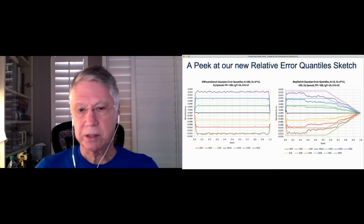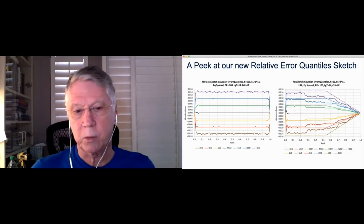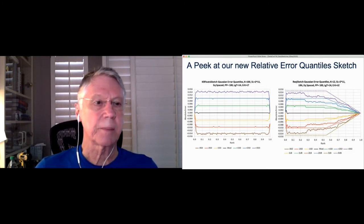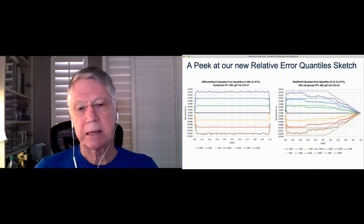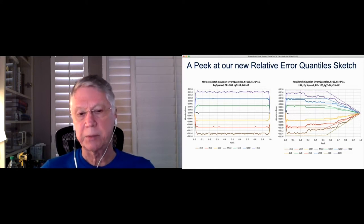The new sketch, though, solves a problem that we've heard quite a bit about where users are saying, OK, well, this is about 1 percent. The one on the left is 1 percent accurate. They say, well, I need much more accuracy, but I only care about the 99th or the 99.99 percent quantiles. So we've developed this what's called the relative error quantile sketch.